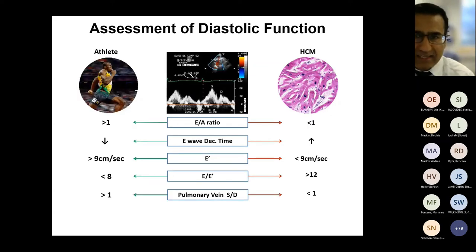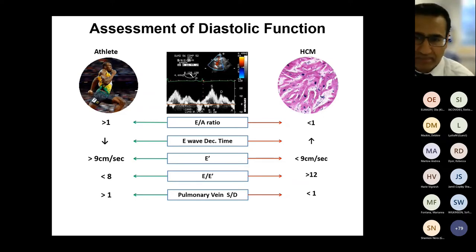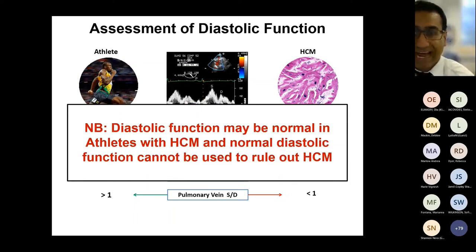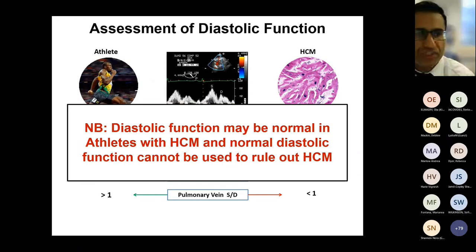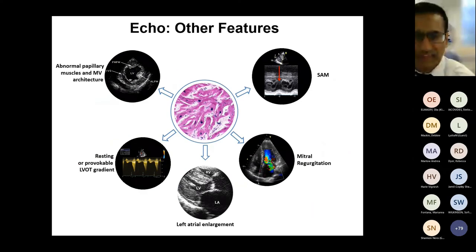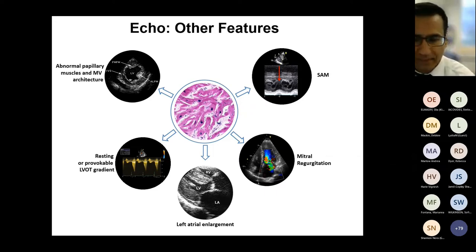Diastolic function has received a lot of attention: athletes have a compliant heart with good diastolic function whereas HCM patients have a stiff heart with impaired diastolic function. However, my 2015 study showed that when it comes to athletes with HCM, diastolic function may actually be normal or supranormal, so we must be cautious using this parameter alone to rule out HCM. Finally in terms of echocardiography, other features to look for include systolic anterior motion and an outflow tract gradient at rest, which we should not expect to see in an athlete — apart from perhaps a degree of left atrial enlargement.